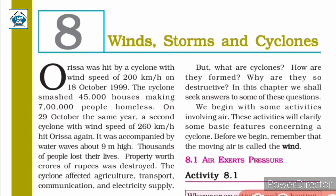So in this paragraph, we read about a cyclone that hit Orissa in the year 1999 twice — first on 18 October and then on 29 October. Two times a cyclone took place in the state of Orissa. This cyclone caused a lot of loss of human life and property.